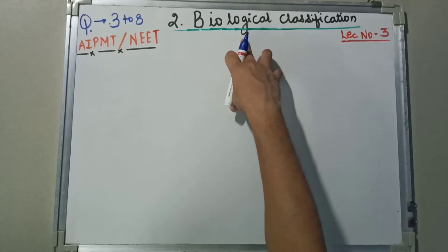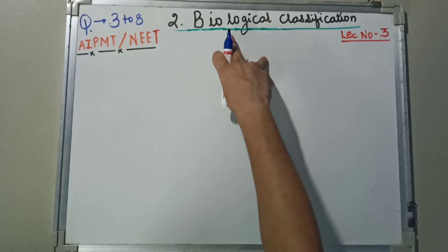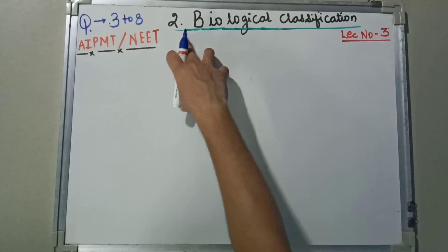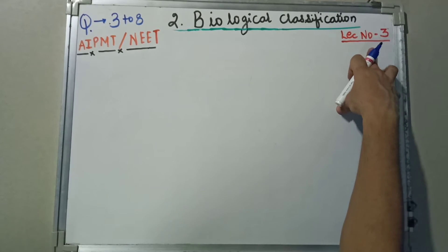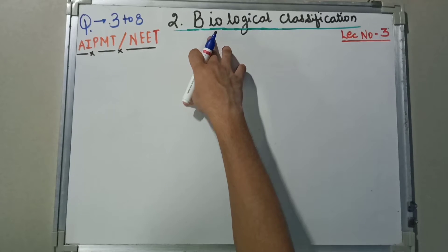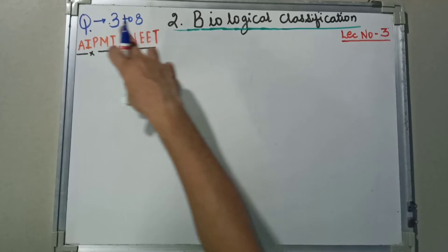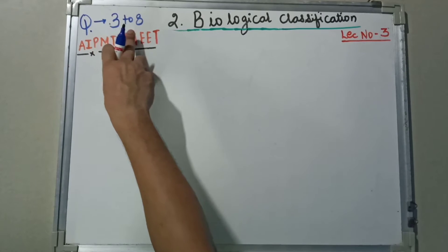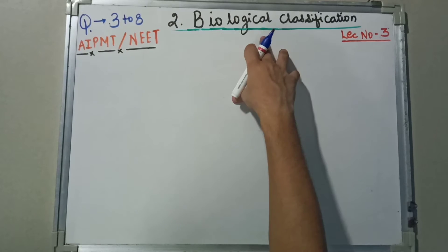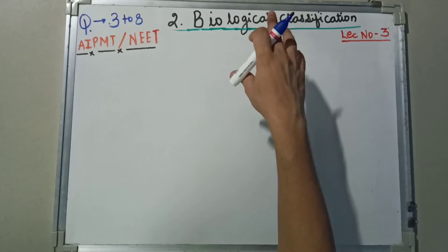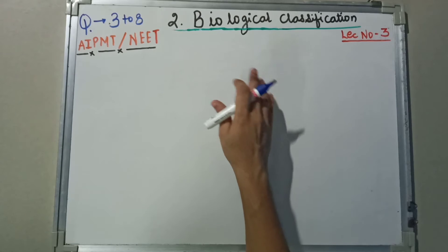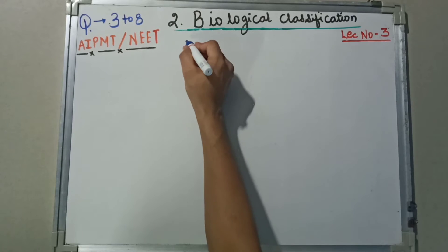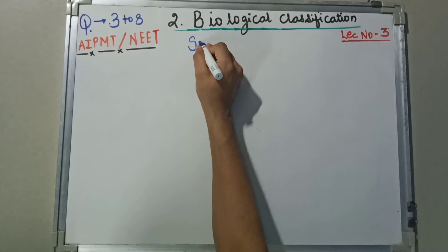Hello friends, welcome back to channel NEET. Today we are going to start with chapter number two, known as biological classification. Today is lecture number three. As I have already told you, in NEET there are near about three to eight questions which could be asked from biological classification, so this chapter becomes very important. Today's topic is systems of biological classification.